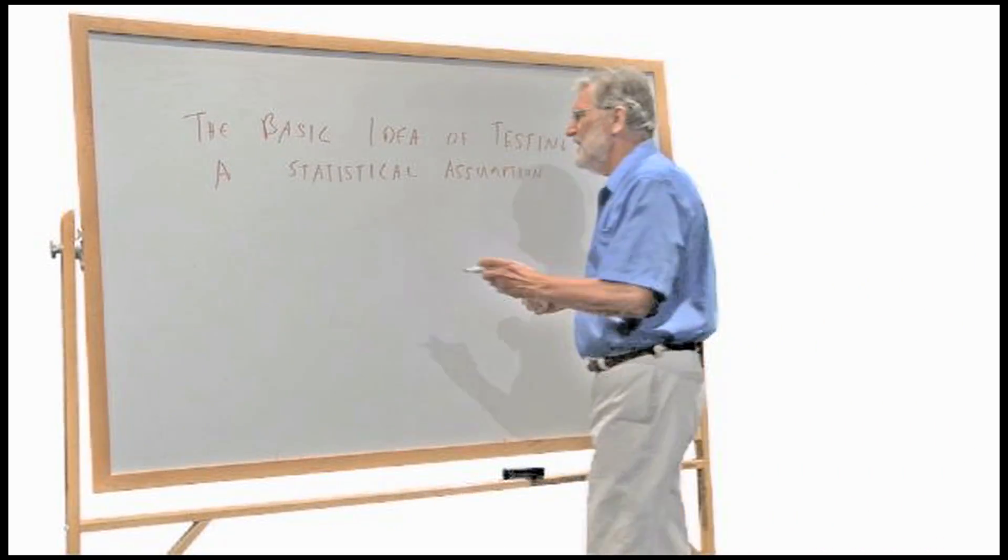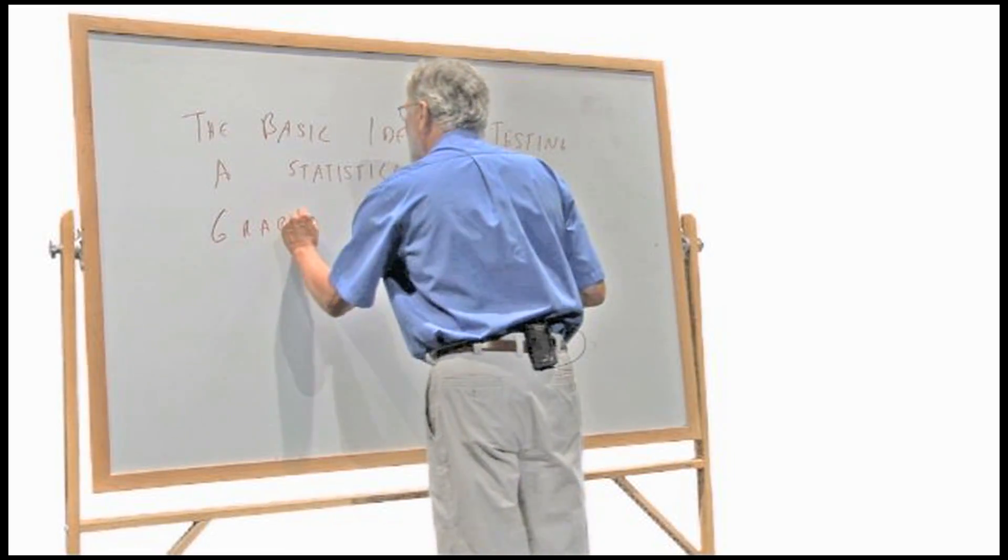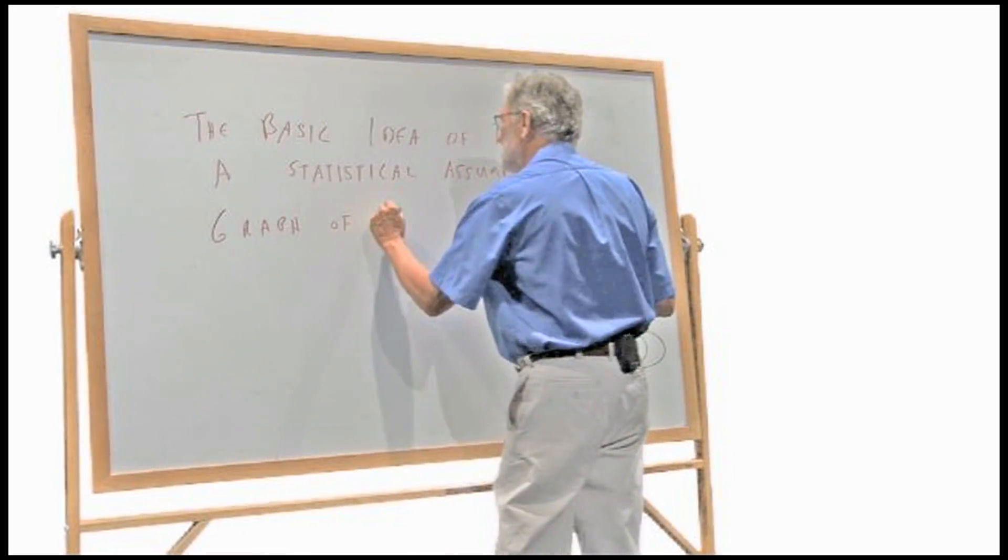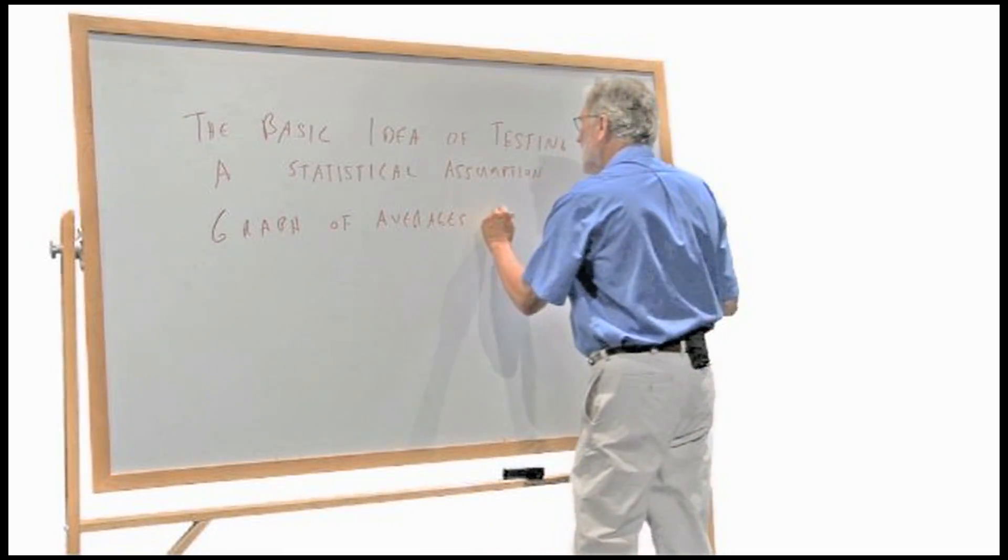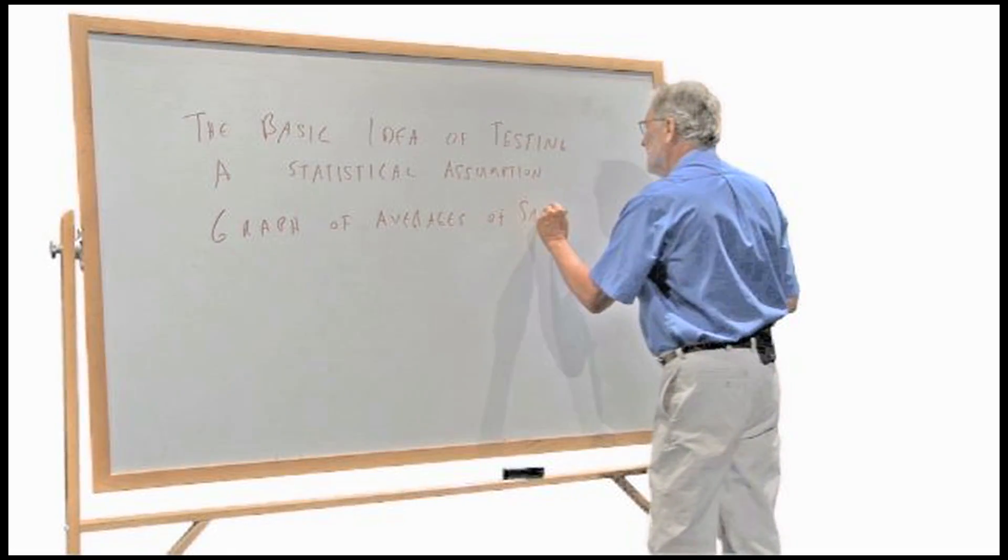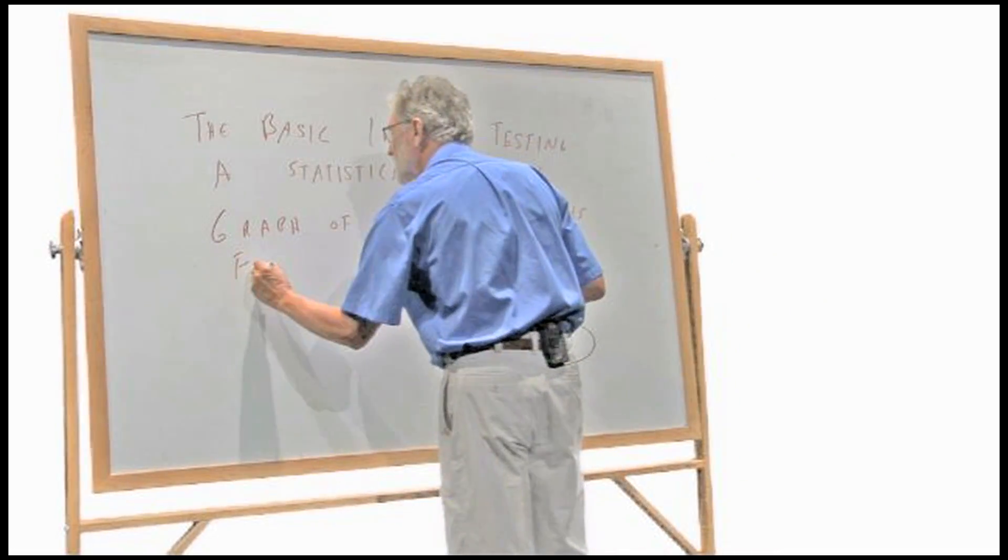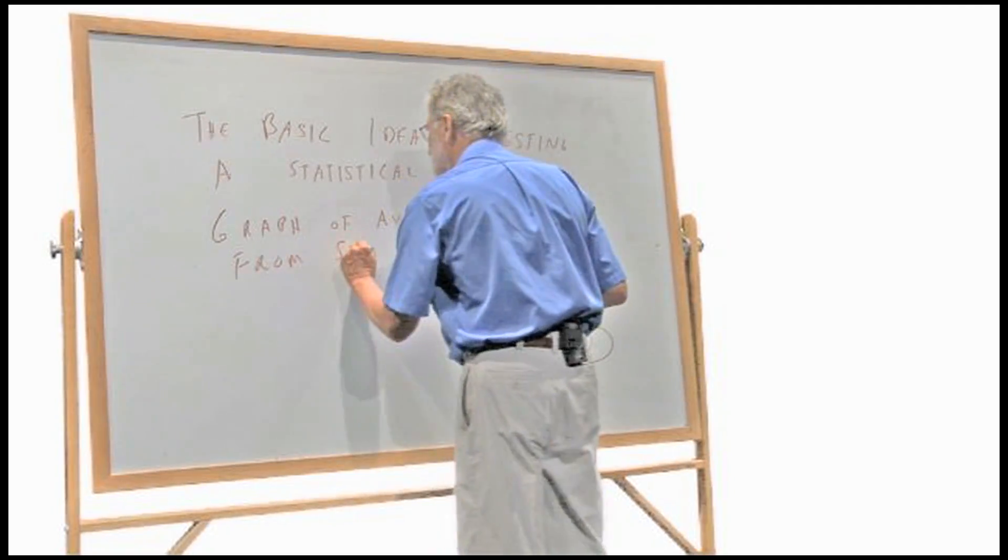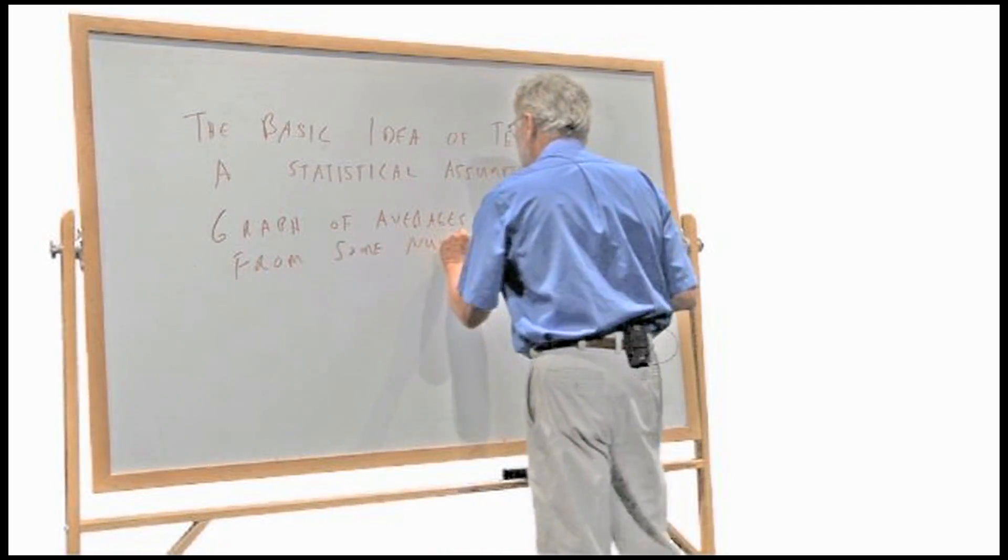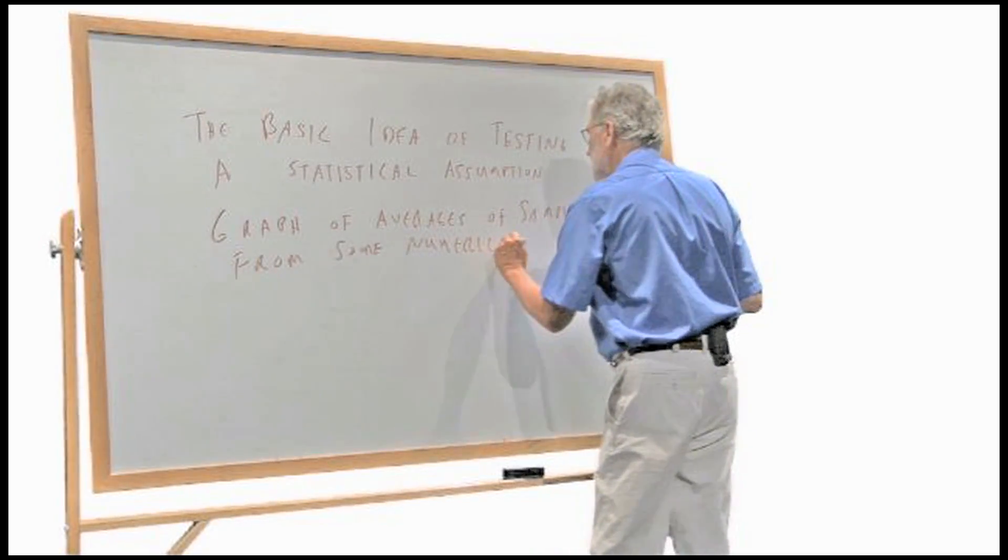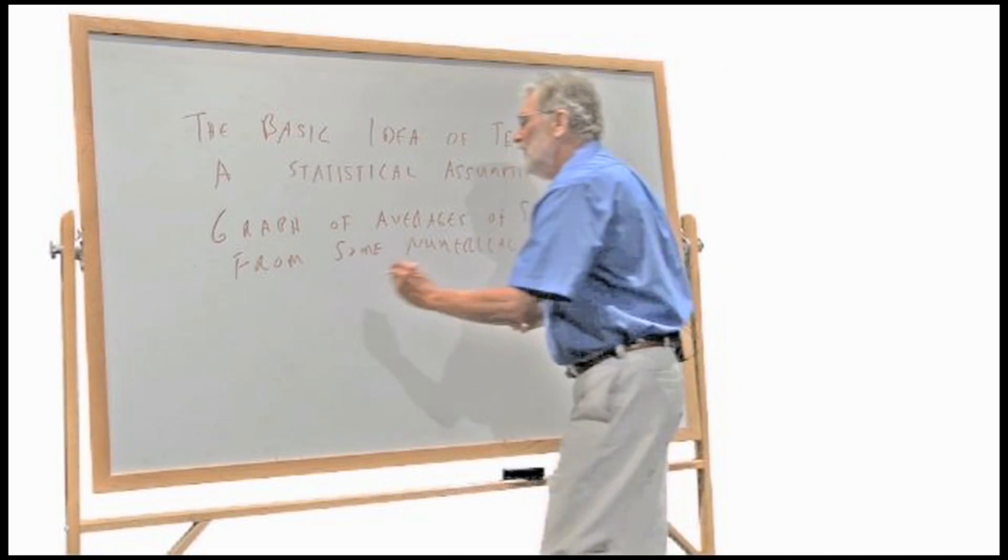In the first talk, I tried to explain that if the graph of averages of samples from some numerical population, pop for population, follow the bell-shaped curve.